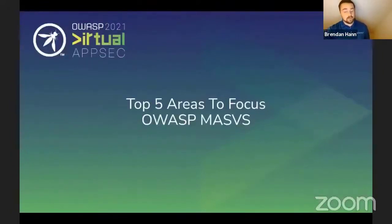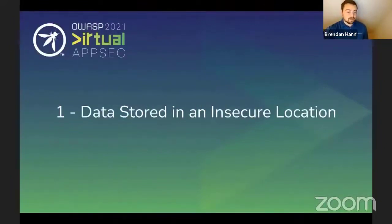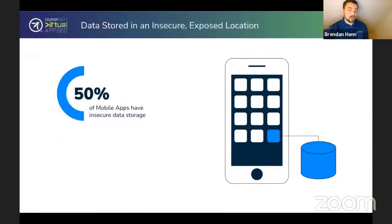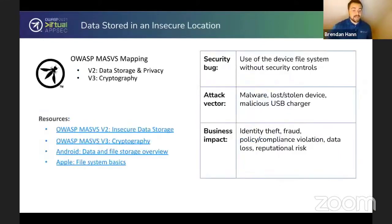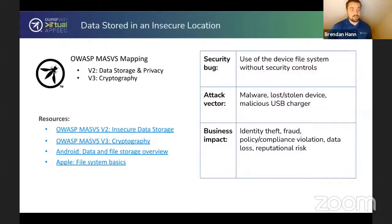The first of the top five focus areas is data stored in an insecure location. Analysis that NowSecure does of apps publicly available in the mobile app store shows that 50% of apps have insecure data storage — a scary statistic. What that really means is that an attacker can use the device file system to steal information from the app, whether through malware, a stolen device, a malicious charger, or anything along those lines. Insecure data storage can lead to identity theft, fraud, and other information stealing. It maps to V2 and V3 of the MASVS domains.